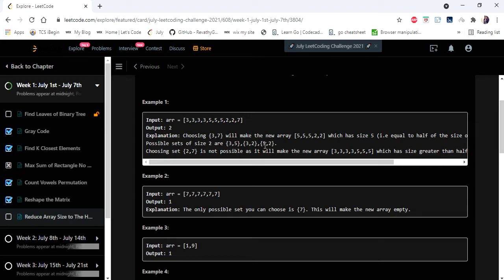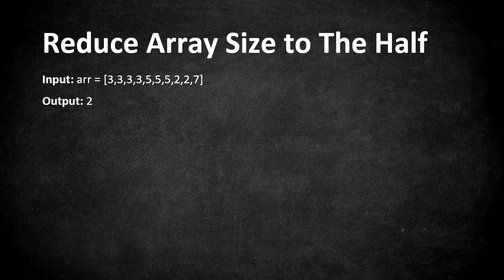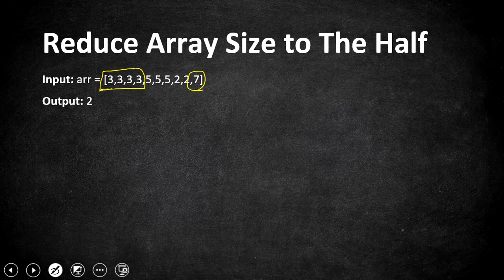Let's understand this with an example. We have to pick an element and remove all its occurrences to make the array size half. If we are picking an element, it has to reduce the size of the array, so we should pick the element that has occurred the most number of times. For example, if we pick 7, the array size is reduced by only one because 7 appears only once. If we pick 3, we remove four 3s, reducing the size by 4. So the idea is to pick the element with the most occurrences.